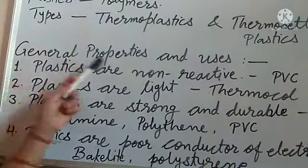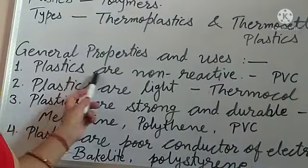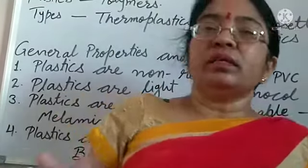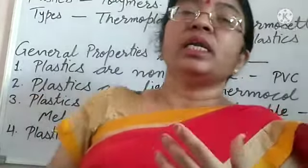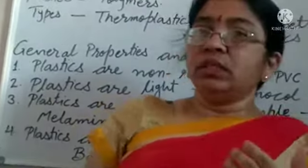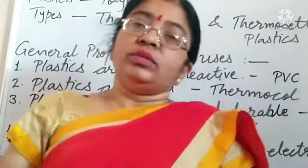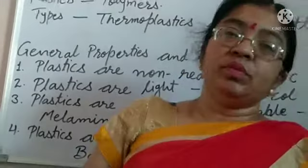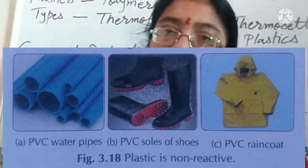Now we will discuss some general properties and uses of different types of plastics. First, plastics are non-reactive. Metals can get corroded due to different conditions like moisture, temperature, and oxygen. But plastics are non-reactive and inert to different chemicals. That is why they can be used for a longer time period properly.